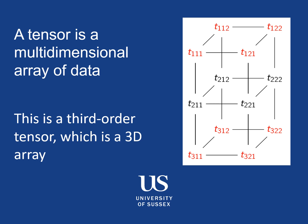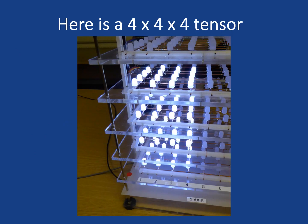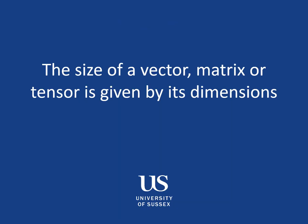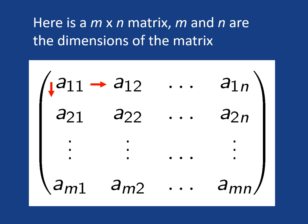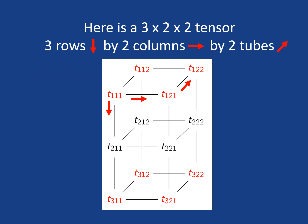We can extend the idea up into three dimensions to make a tensor. So this, for example, is an array of four by four by four LEDs — a four by four by four tensor. Just to summarize, the size of a vector, matrix or tensor is given by its dimensions. Here's an m by one column vector and a one by n row vector, an m by n matrix, and here is a tensor — this happens to be a three by two by two tensor. So we've got three rows, two columns, and two in the other direction, and these are often called tubes.